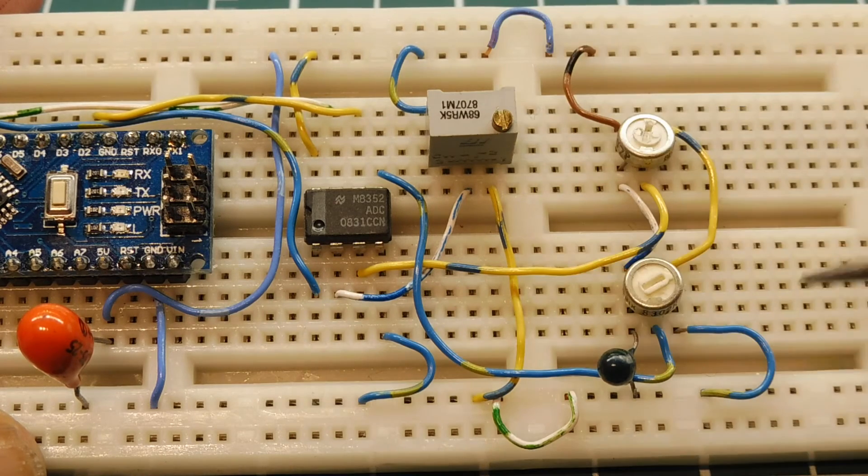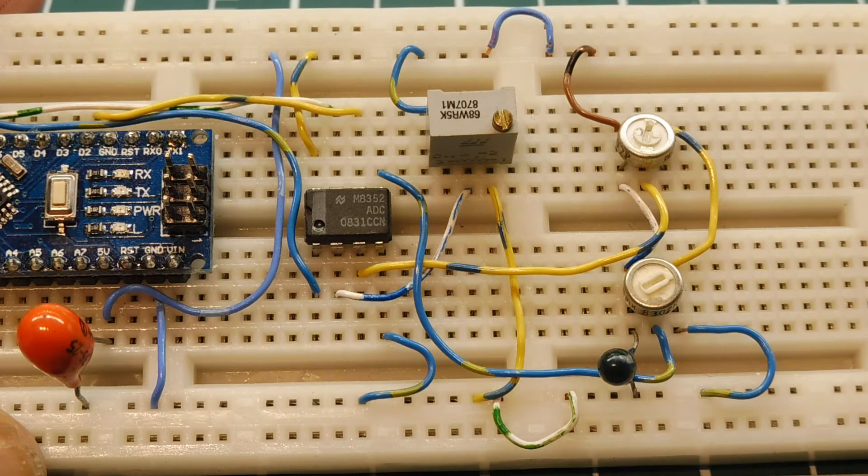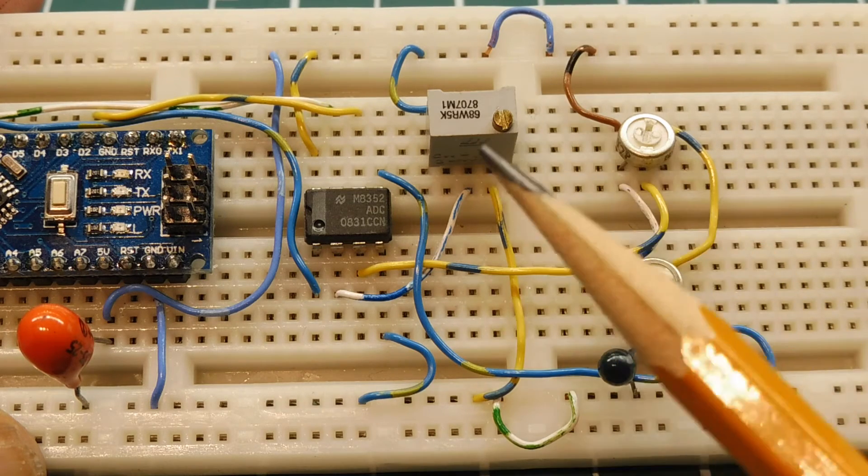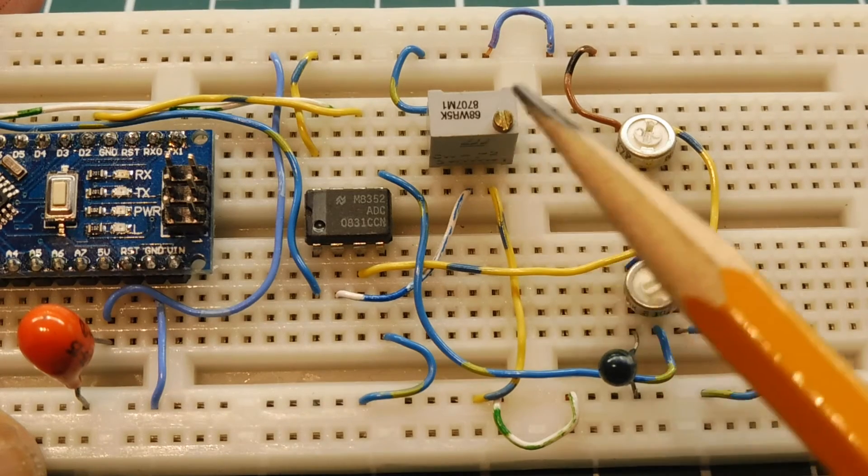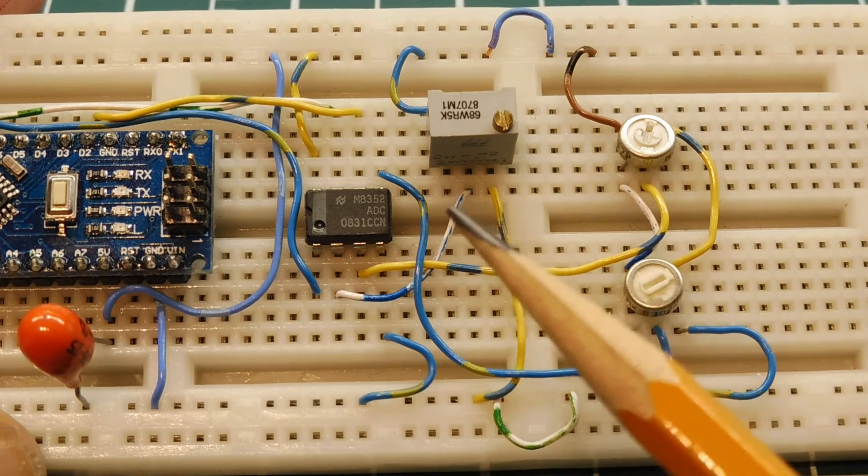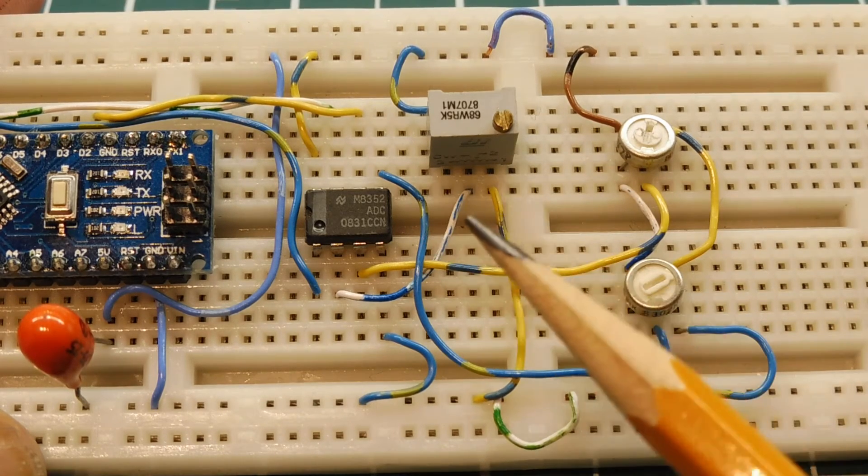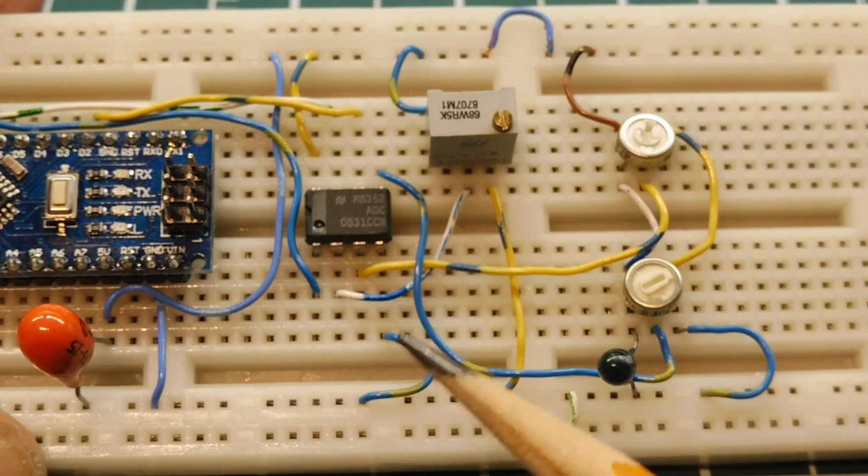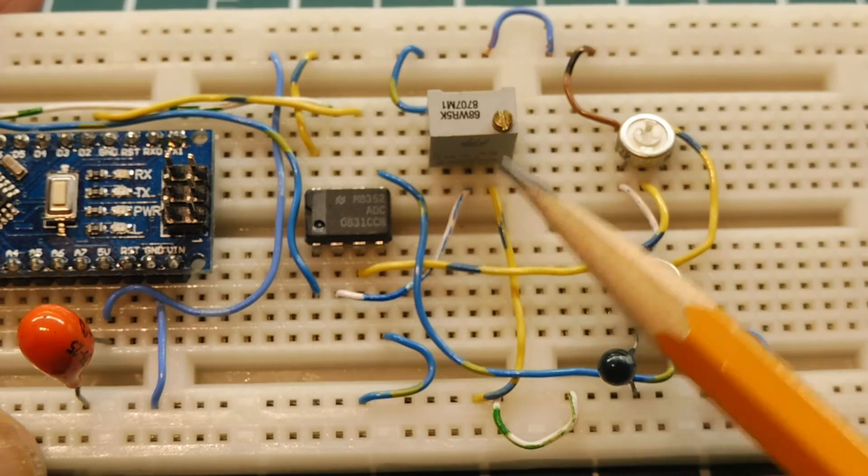Now, by adjusting these three pots in a certain way, I can make it so whatever the voltage span is of my sensor, I could apply the full 8 bits, the full 256 steps across that voltage span. So, I'll get the full resolution, no matter what the output is of my sensor.